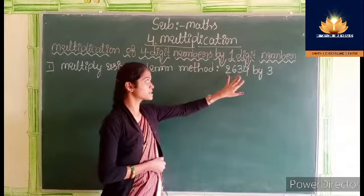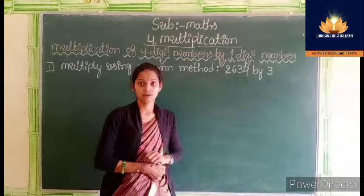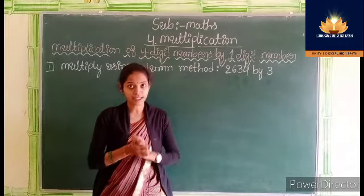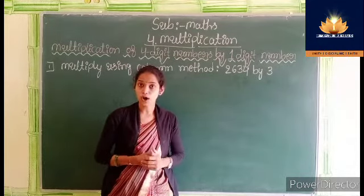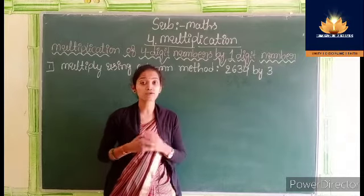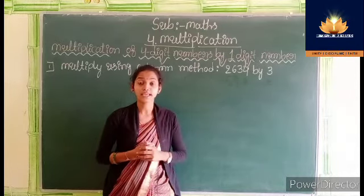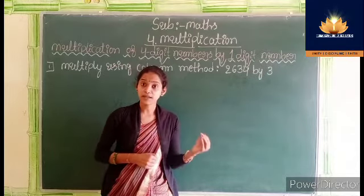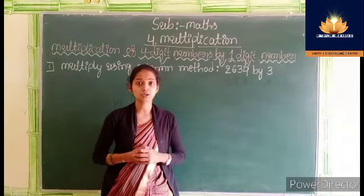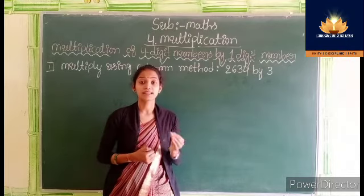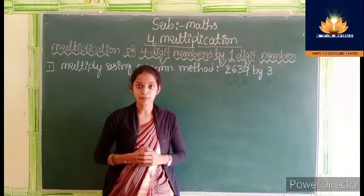Here 2634 is the multiplicand and 3 is the multiplier. Students, you know the terms multiplicand, multiplier, and product. Multiplicand means the number to be multiplied. The number with which we multiply is called the multiplier. The result so obtained is called the product. These are some terms used in multiplication.